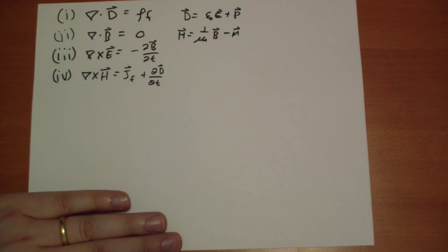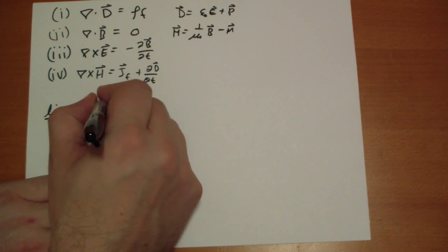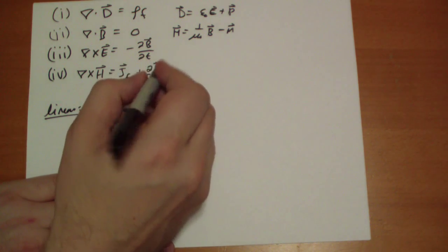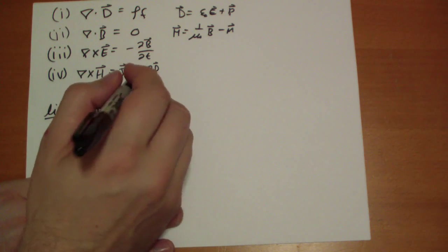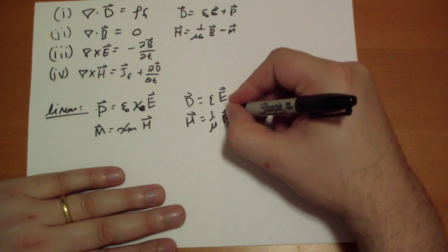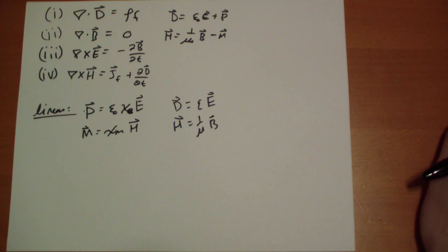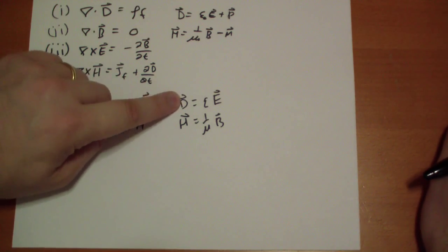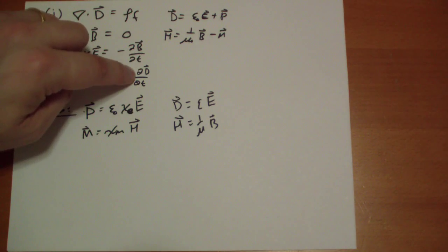In linear media, we have our susceptibilities and related quantities. The polarization P-vector is equal to epsilon-naught chi_e times the electric field. The magnetization is equal to chi_m times the H-vector. And so D equals epsilon times E, and H equals 1 over mu times B. Remember we called the change in the electric field in Maxwell's equation the displacement current — well, here we actually have a good reason to call it the displacement field. Because the D field is the displacement field, and the change in displacement D is the displacement current. It makes a lot of sense.